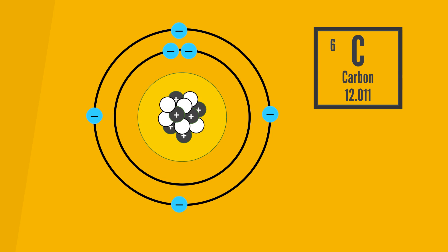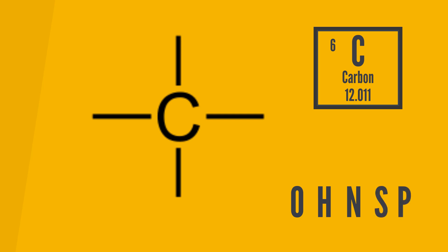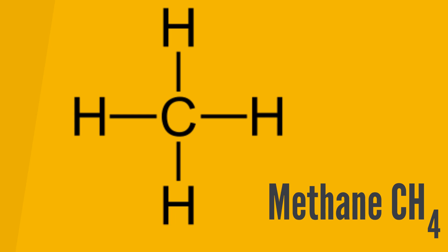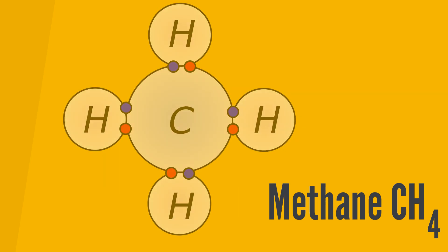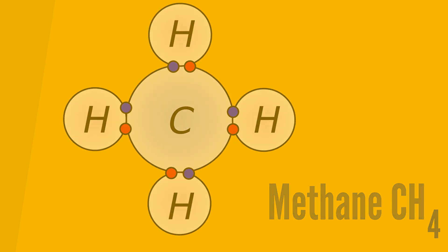Carbon is a very unique element in that it has four valence electrons in its outer orbital, and it can form four single covalent bonds with up to four other atoms at the same time. These atoms are usually oxygen, hydrogen, nitrogen, sulfur, phosphorus, and carbon itself. The simplest organic compound is methane, CH4, in which a single carbon atom binds to four hydrogen atoms.